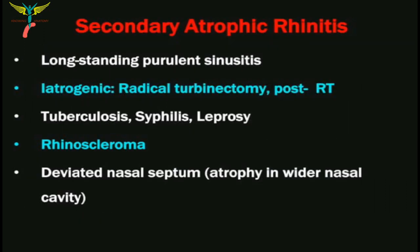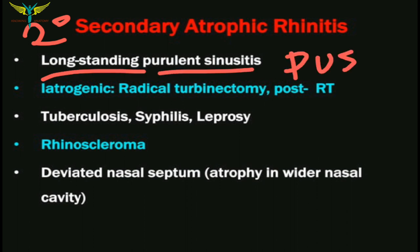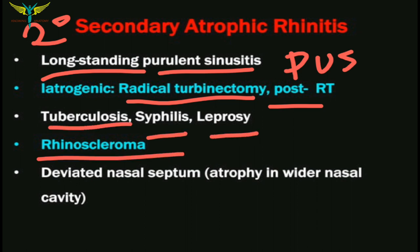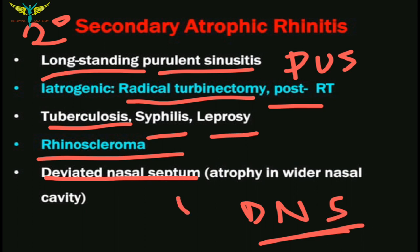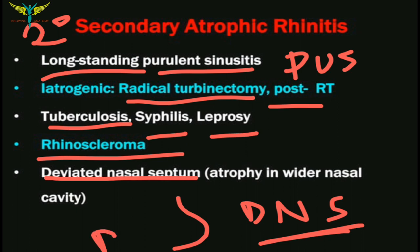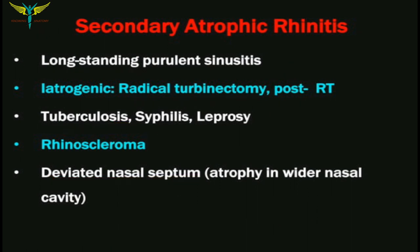Secondary atrophic rhinitis is associated with long-standing purulent sinusitis. It is seen mostly in iatrogenic causes like radical turbinectomy and post-radical turbinectomy. It is also seen in tuberculosis, syphilis, leprosy, rhinoscleroma, and deviated nasal septum (DNS). A DNS on one side causes atrophy due to the wide cavity formed by the deviation of the nasal septum, leading to secondary atrophic rhinitis.